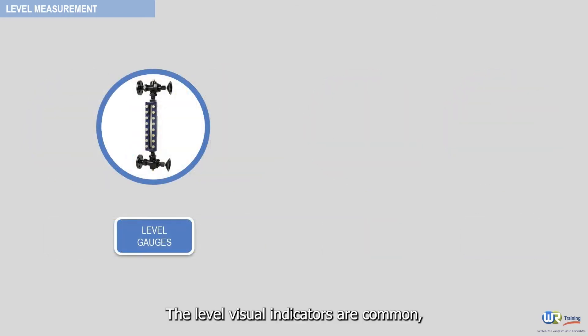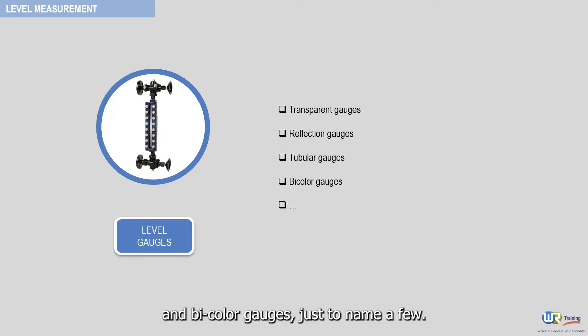The level visual indicators are common, and there are actually different ways to indicate the level with these devices. You can find typically transparent gauges, reflection gauges, tubular gauges, and bicolor gauges, just to name a few.